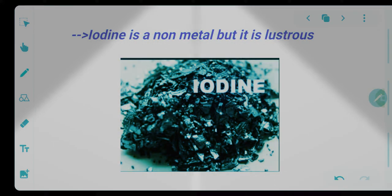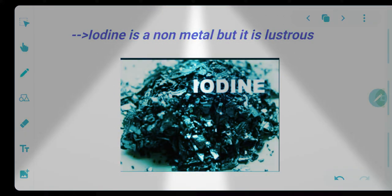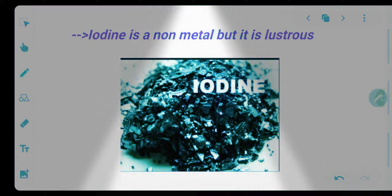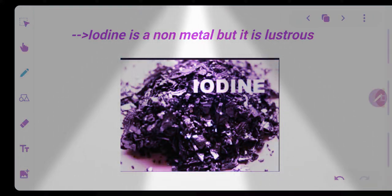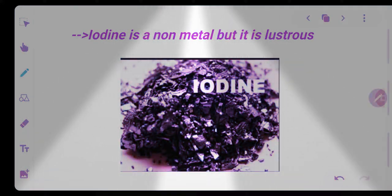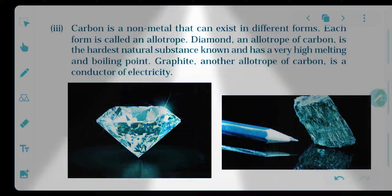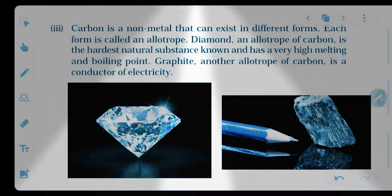The second exceptional case is iodine. Iodine is a non-metal, but it is lustrous — you can see that iodine also shines, and its surface reflects light when light is incident on it.